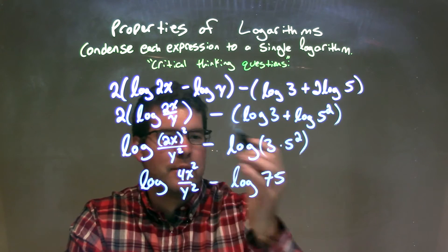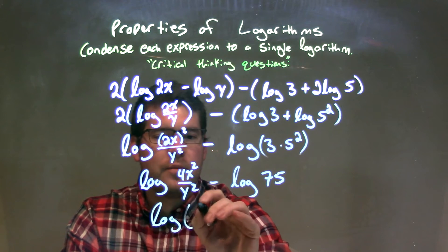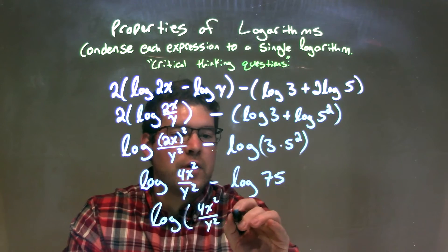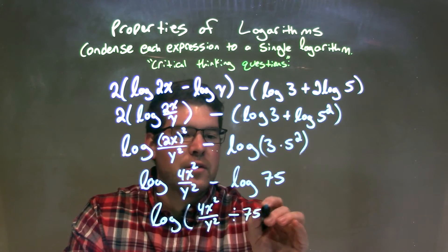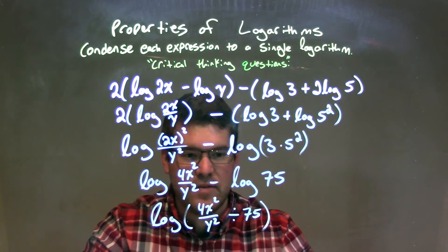So I'm going to show it like this. We have log here, one big logarithm, 4x squared over y squared divided by 75. Well, then divided by 75 is the same thing as multiplied by 1 over 75, right?